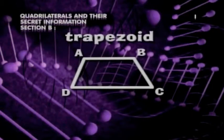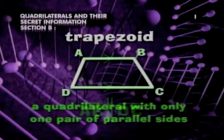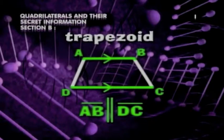There's one more shape. A trapezoid is a quadrilateral with only one pair of parallel sides. In this trapezoid, segments AB and DC are parallel.